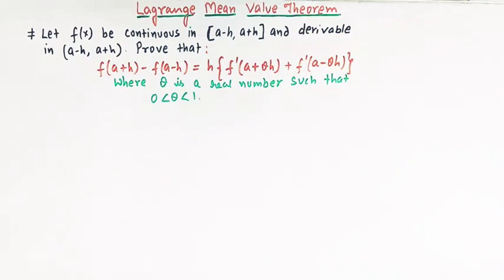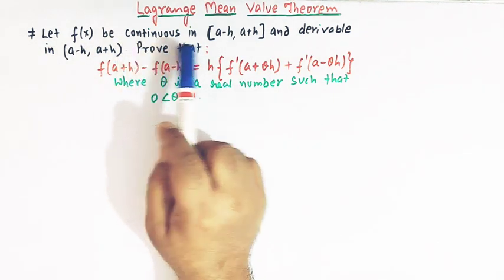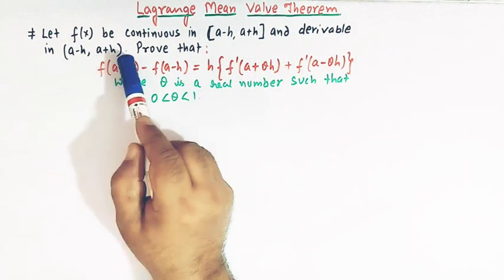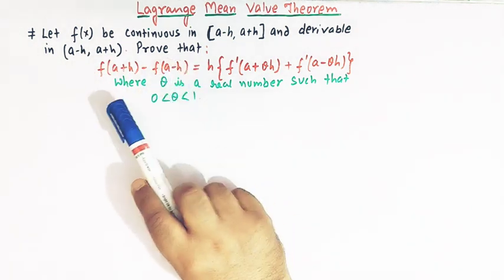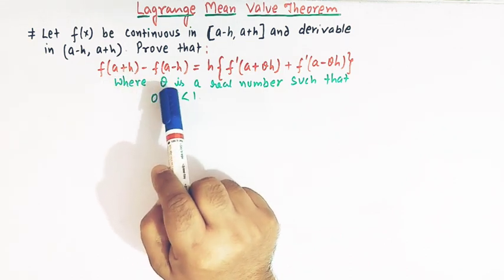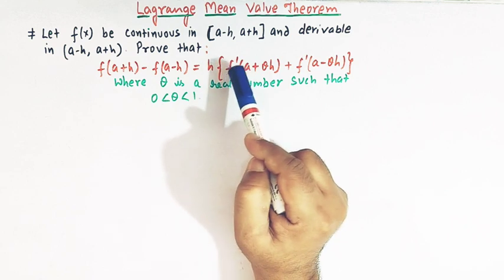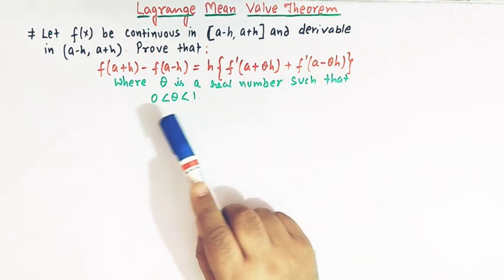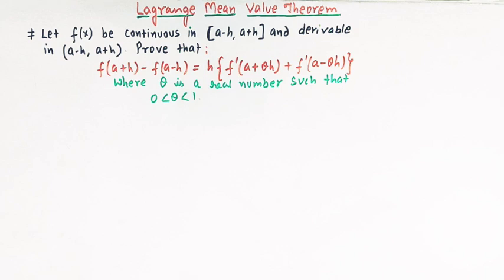Hello viewers. In today's class we are going to discuss an important application of Lagrange's mean value theorem. We have a very nice problem in which we are given a function f(x) which is continuous in the closed interval [a−h, a+h] and derivable in the open interval (a−h, a+h), then we have to show that f(a+h) − f(a−h) = h[f′(a+θh) + f′(a−θh)], where θ is a real number lying between 0 and 1.